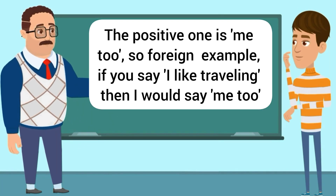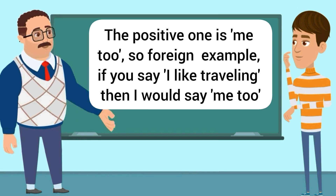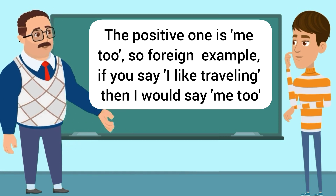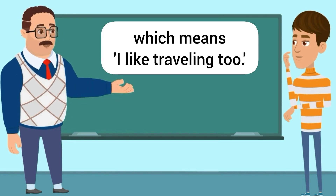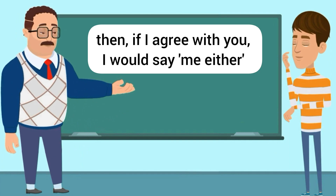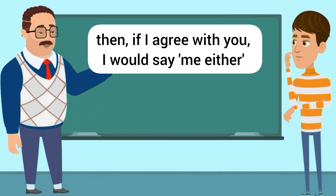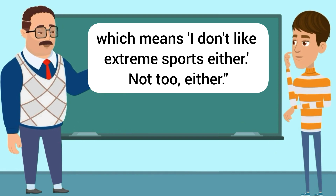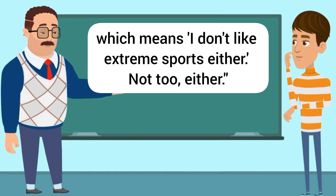The positive one is 'me too.' For example, if you say 'I like traveling,' then I would say 'me too,' which means 'I like traveling too.' On the other hand, if you say 'I don't like extreme sports,' then if I agree with you, I would say 'me either,' which means 'I don't like extreme sports either.'